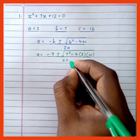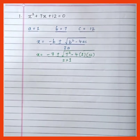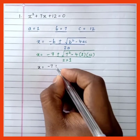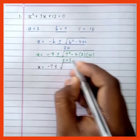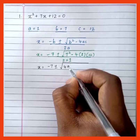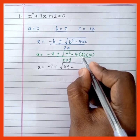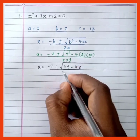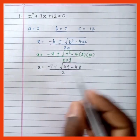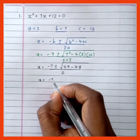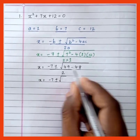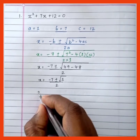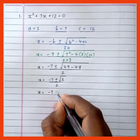Now simplify: x = (-7 ± √(b²)) where b is 7, so 7² = 49. Then 4 × 1 × 12 = 48. So we get x = (-7 ± √(49 - 48)) / 2. Now 49 - 48 = 1, therefore we get x = (-7 ± √1) / 2.